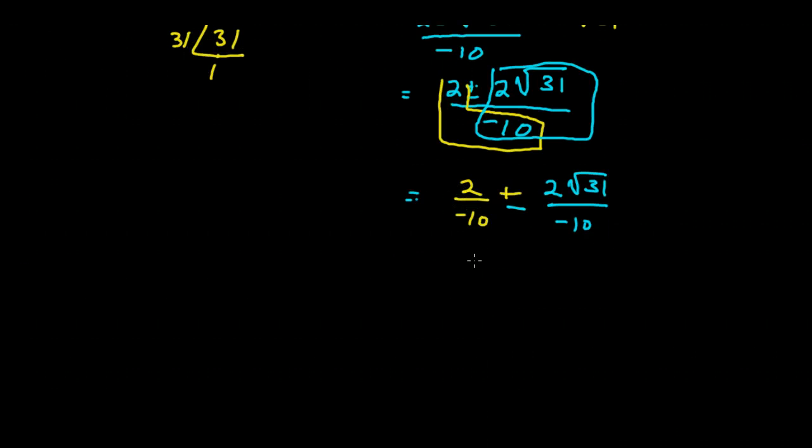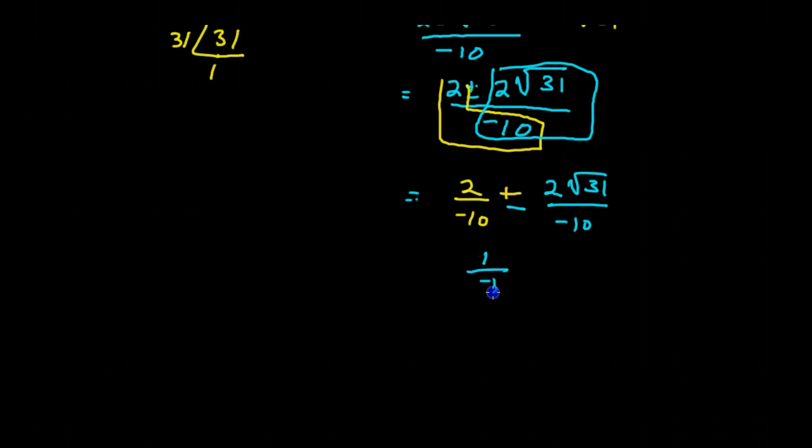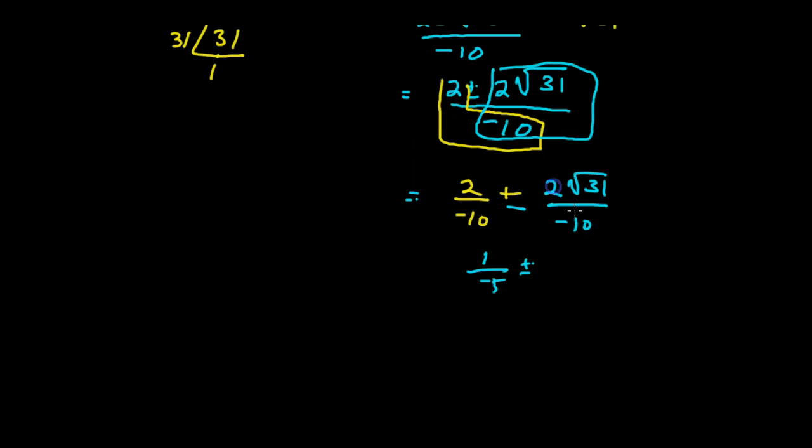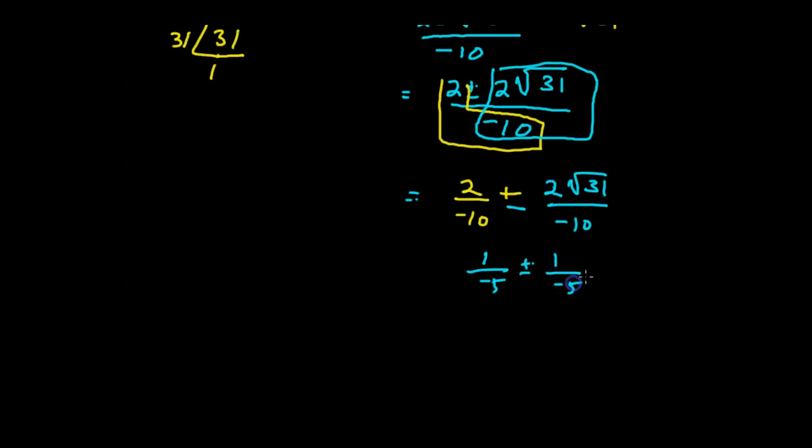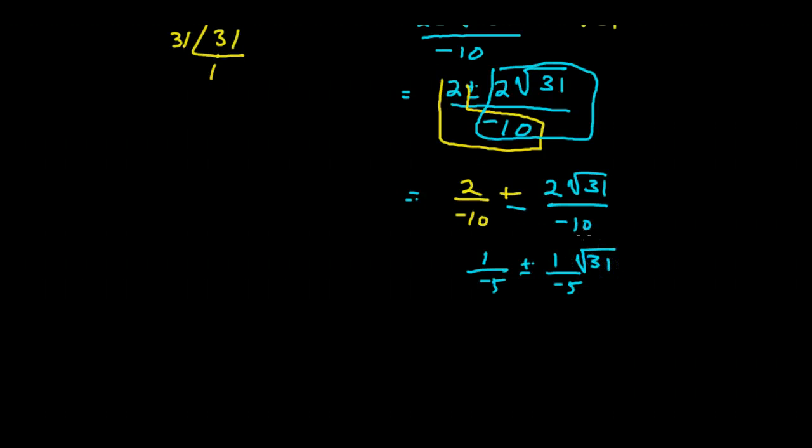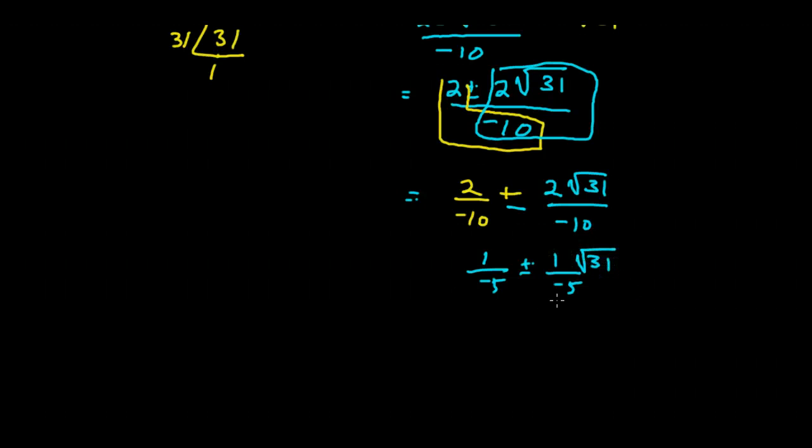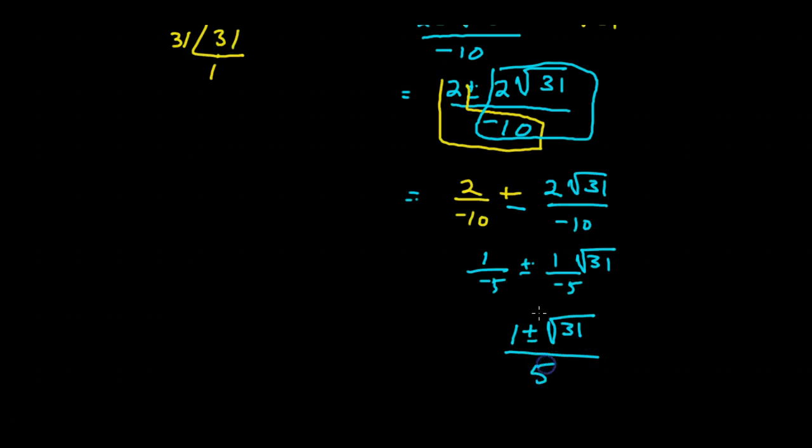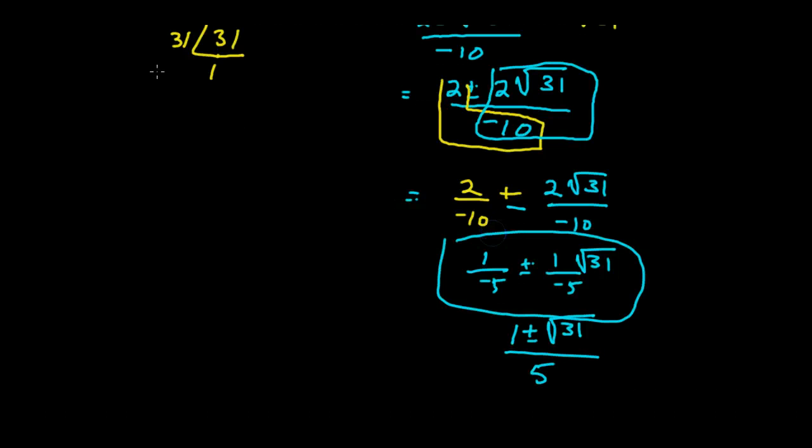2 divided by negative 10 is the same as 1 divided by a negative 5, plus or minus. And again, I have 2 over a negative 10. So that will be 1 over a negative 5. But this one will be times a radical 31. Since I just have 1 radical 31, can't I just say that I have 1 plus or minus the square root of 31 all over negative 5? I just recomposed this number here.